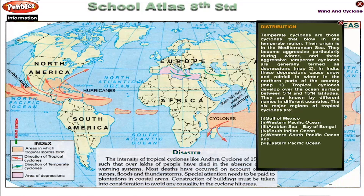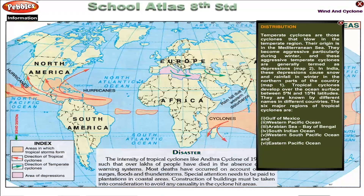Tropical cyclones are known by different names in different countries. The six major regions of tropical cyclones are the Gulf of Mexico, Western Pacific Ocean, Arabian Sea, Bay of Bengal, South Indian Ocean, Western South Pacific Ocean and Eastern Pacific Ocean.